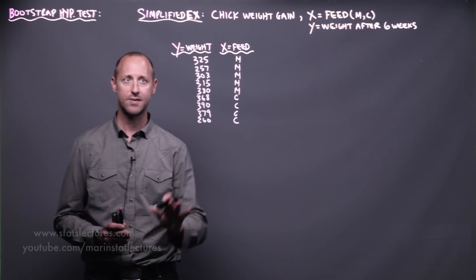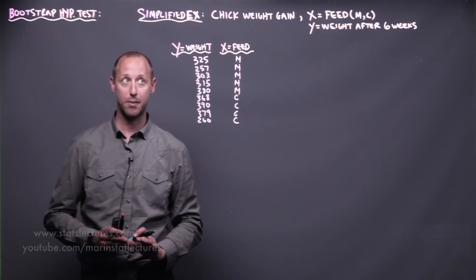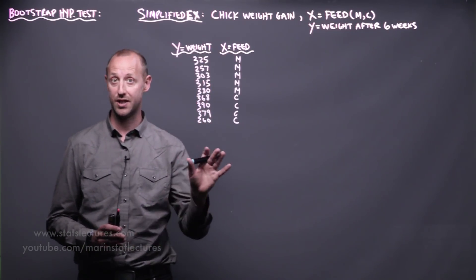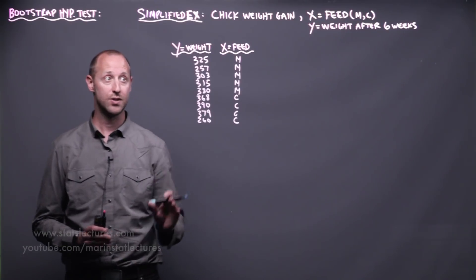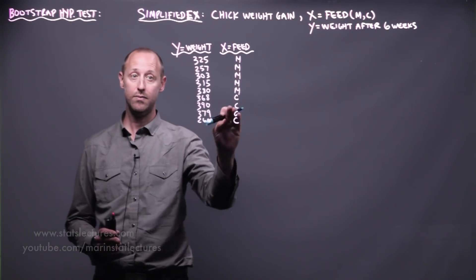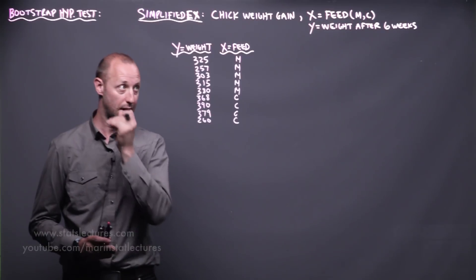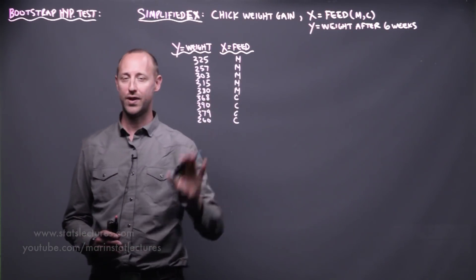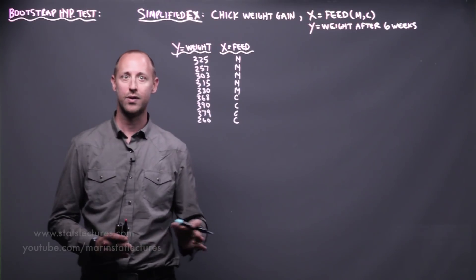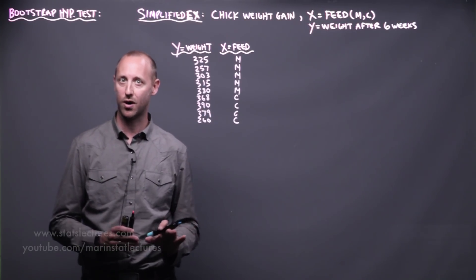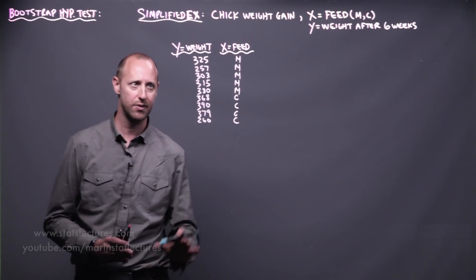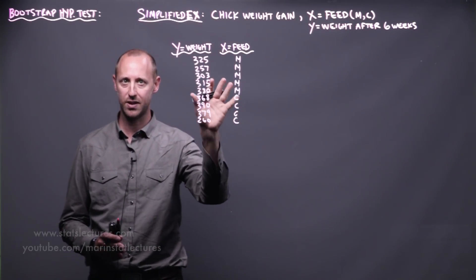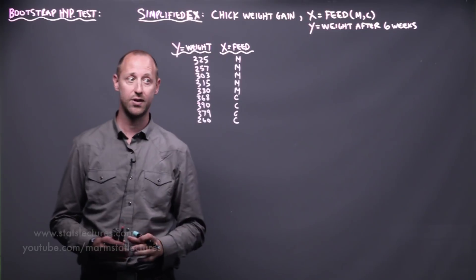To work through the ideas, we're going to work with this simplified example. This looks at the weights of chicks on two different diets — they're either given a diet of meat meal or a diet of casein, and after six weeks their weight is measured. We have the full dataset that we'll work through in R, but this is just a subset to keep it smaller and simpler so we can visualize all of the data on the screen.